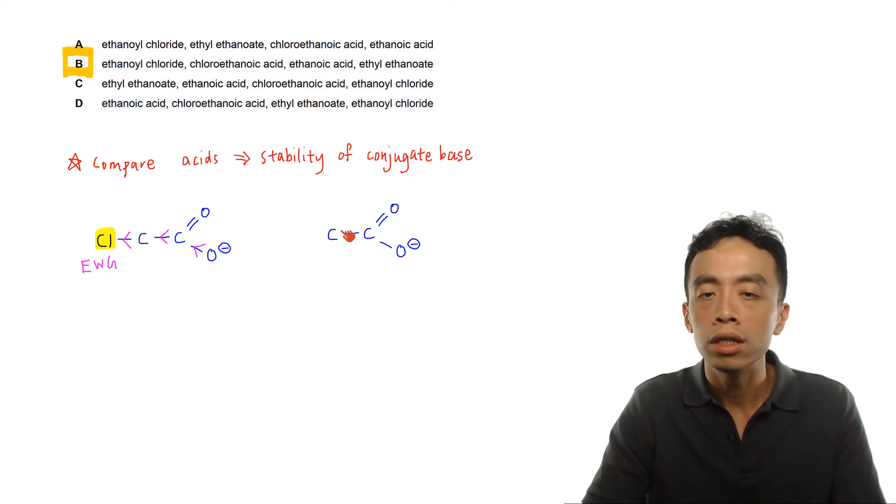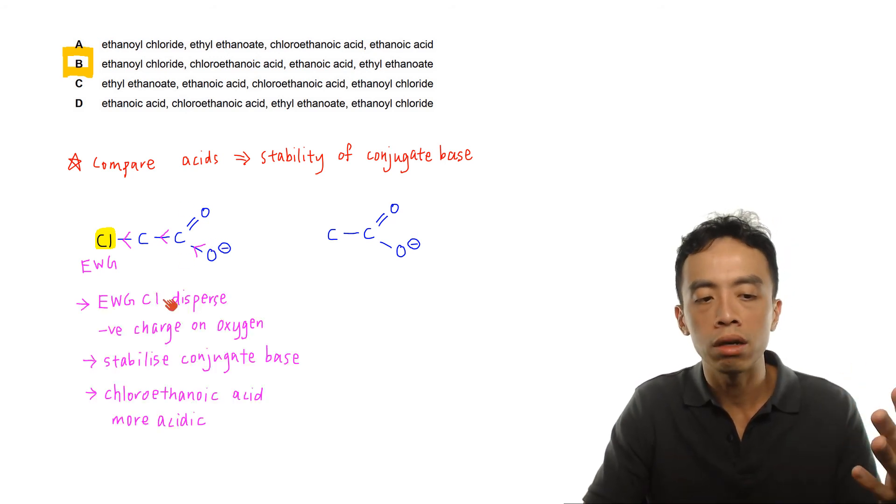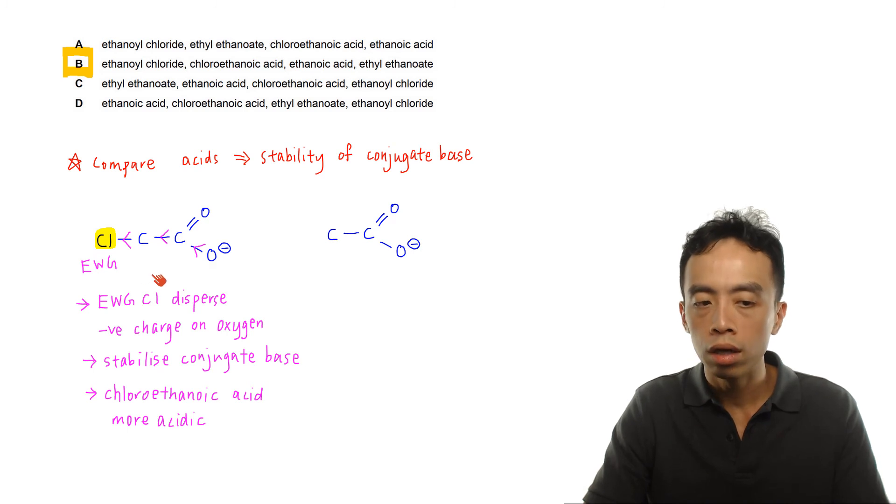For ethanoic acid, the conjugate base doesn't have this stabilizing effect. Comparing these two conjugate bases, the one involving chloroethanoic acid will be more stable, making this acid more acidic. If I have an electron withdrawing group like chlorine, it will help disperse the negative charge on oxygen, stabilizing the conjugate base to a bigger extent. Therefore, chloroethanoic acid is more acidic.